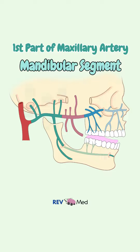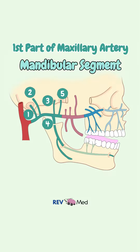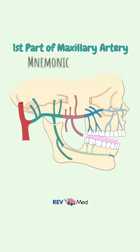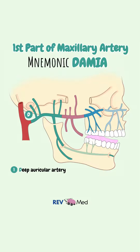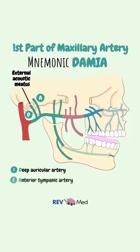The first part is the mandibular, which has five branches. For this, we'll use the mnemonic DAMIA. D for deep auricular, which passes through the external acoustic meatus. A for anterior tympanic artery, which enters the squamotympanic fissure.